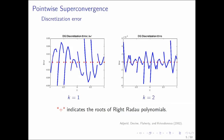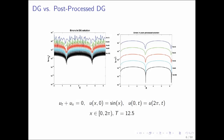DG exhibits this well-known superconvergence property, and Galerkin methods do as well. This was proven long ago by Adjerid, Devine, Flaherty, and Krivodonova. These are the discretization errors for DG — we have quadratic for K equals 1, and for K equals 2 you can see a cubic mesh. You have to plot many points per cell to see whether your solution has superconvergence. You'll see the errors cross the zero axis at specific points within an element.